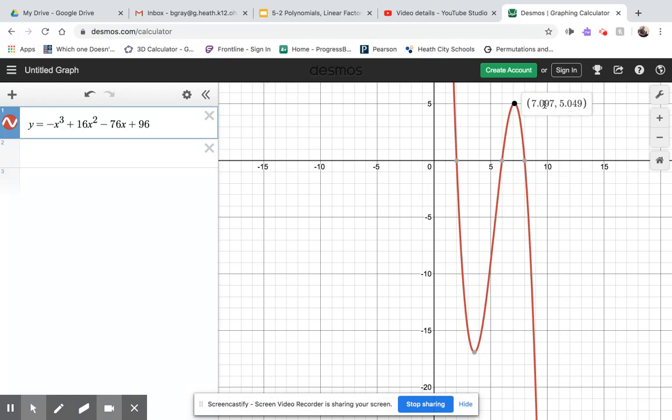As far as I know, Desmos automatically rounds things off to three decimal places. I don't know of any way to make it show any more than that, so should you need more decimal places for a desired level of accuracy, you would kind of be out of luck.